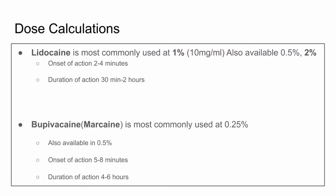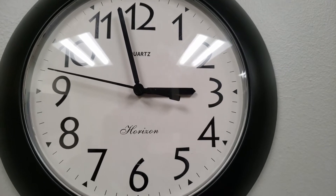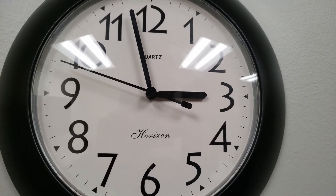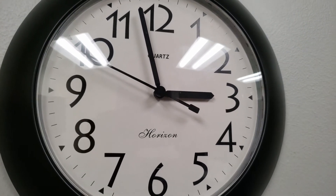Lidocaine is the most commonly used local anesthetic. It is used in a dose of 1% (10 mg/ml) or 2%. It takes action in 2–4 minutes and has a duration of up to 2 hours.